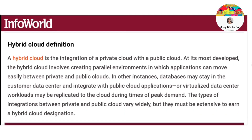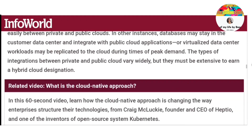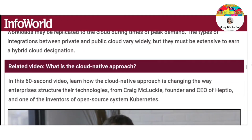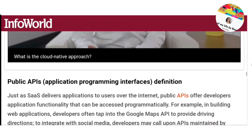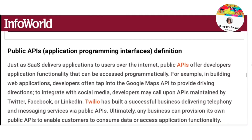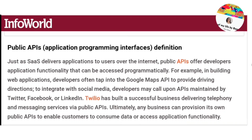How is cloud different from the internet? The key difference between cloud computing and the Internet of Things is that cloud computing provides hosted services over the internet, whereas the Internet of Things connects surrounding smart devices to the network to share and analyze decision-making data.